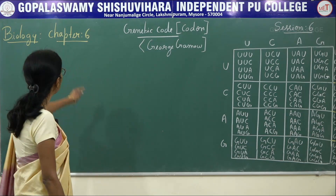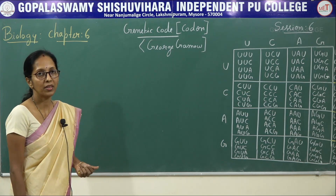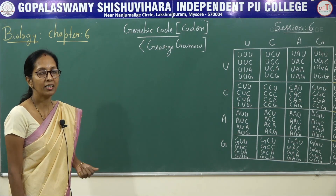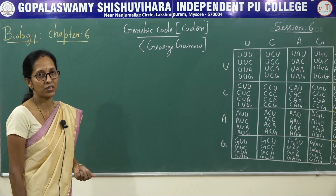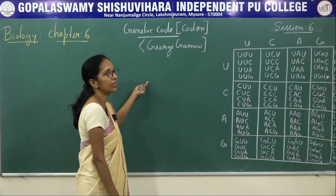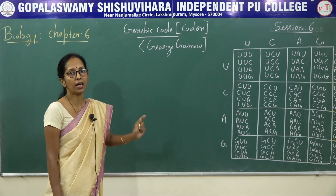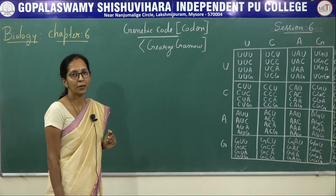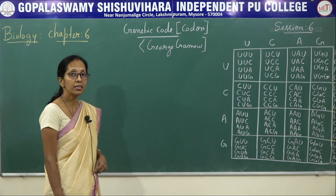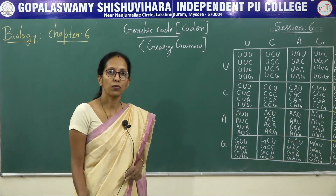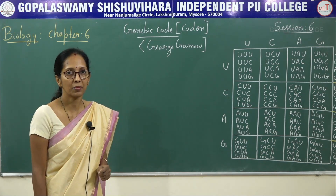Good morning. Today I will be continuing with the same chapter, chapter number 6, that is Molecular Basis of Inheritance. In the previous session we discussed about DNA and RNA. DNA is said to be deoxyribosugar and it is a double-stranded structure. RNA is a single-stranded structure. We studied two different types of RNA: genetic RNA, which acts as genetic material, and non-genetic RNA. In non-genetic RNA we studied three types: messenger RNA, transfer RNA, and ribosomal RNA. These three types of RNA are synthesized from the DNA template strand in the nucleus and enter the cytoplasm to help in the synthesis of proteins.